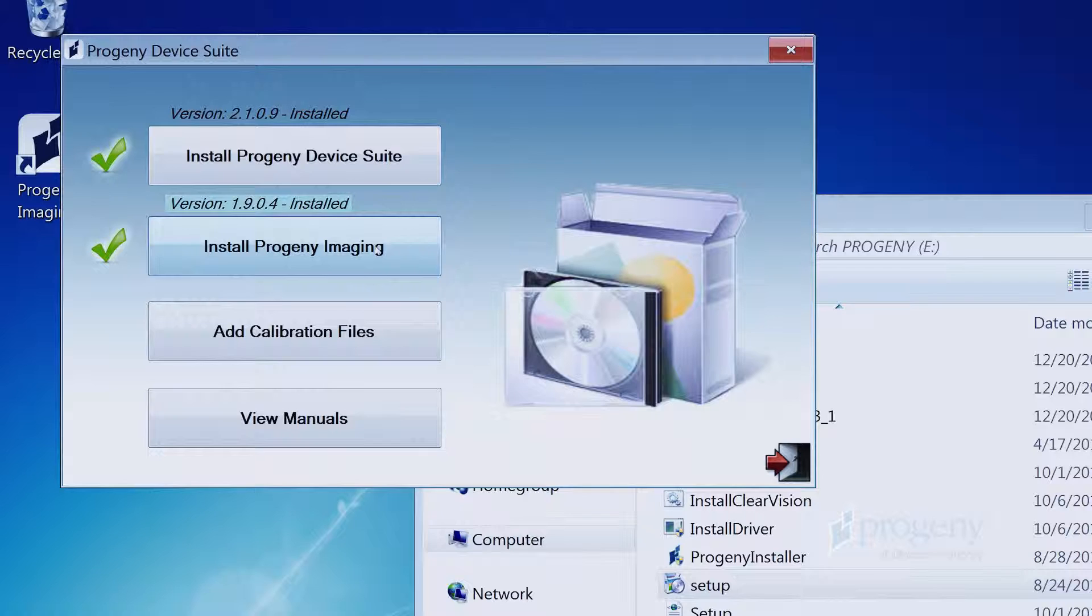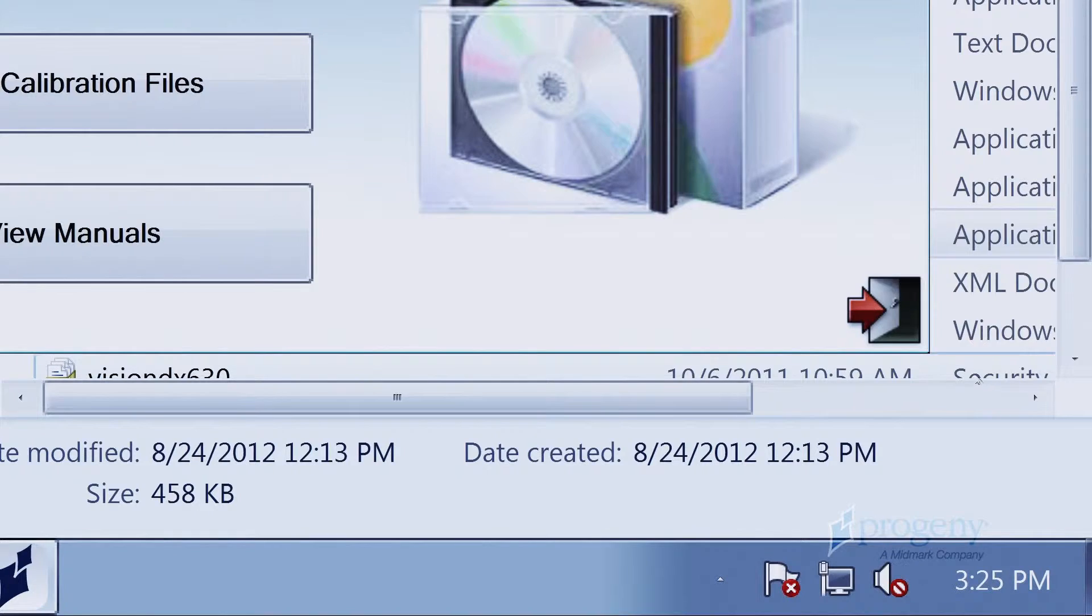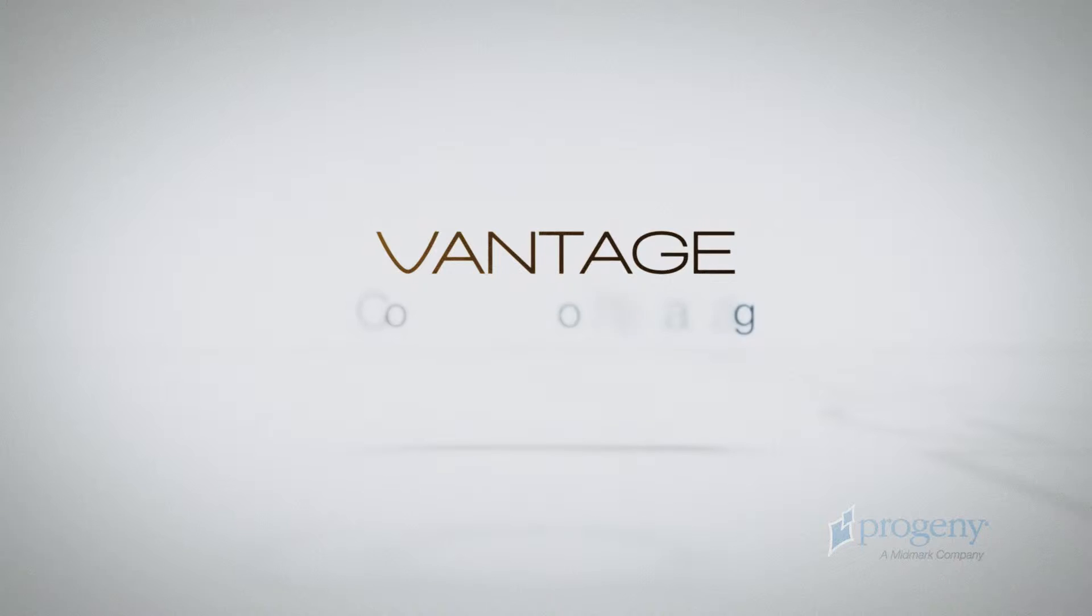Green checkmarks next to each of the buttons will appear when both the Progeny Device Suite and Progeny Imaging are installed. Exit installation by clicking on the exit door icon.